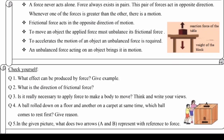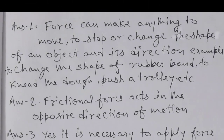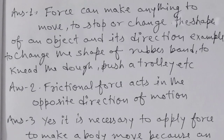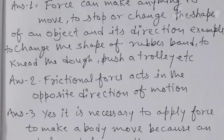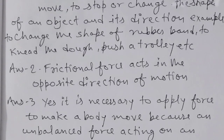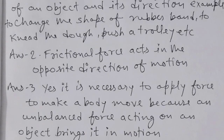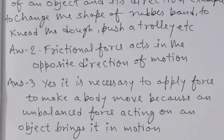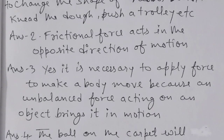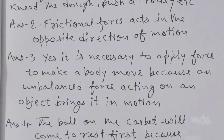Now let us discuss the questions. Question 1: What effects can be produced by force? Force can make anything move, stop, or change the shape and direction of an object — examples: changing the shape of a rubber band, kneading dough, pushing a trolley. Question 2: What is the direction of frictional force? Frictional force acts in the opposite direction of motion. Question 3: Is it necessary to apply force to make a body move? Yes, it is necessary because an unbalanced force acting on an object brings it into motion.